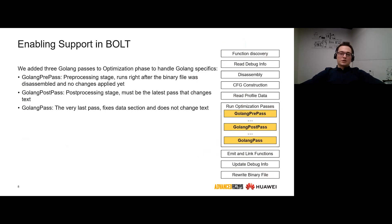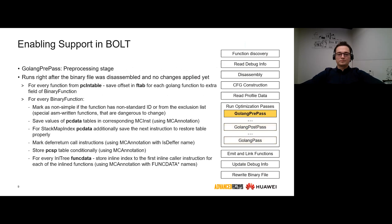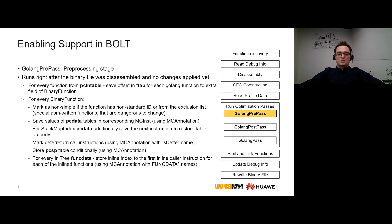Most of the functionality required to enable GoLang support was implemented in three additional GoLang optimization phase passes executed in the following order: GoLang pre-pass, GoLang post-pass, and GoLang pass. The GoLang pre-processing stage is executed right after the binary is disassembled and no changes have been applied. On this stage, we save all information which will later be required to be updated. This includes saving the offset in FTAB in an extra field of the binary function class, marking some functions considered dangerous to be modified as non-simple to avoid optimization, and saving values of PC data, func data tables, and PCSP using MC annotation for related MC instruction objects.